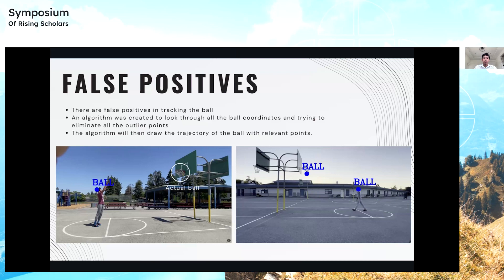To counter this, I created an algorithm to look through all the ball coordinate points in each frame to eliminate all the outlier points. My algorithm then drew the trajectory of the ball with the relevant points, which helped me determine the optimum shooting angle. For example, on the bottom left of this slide, the actual ball is over here, but it has taken my head as the ball.